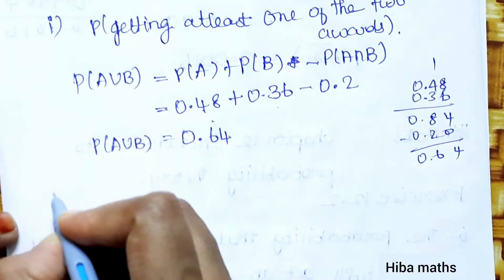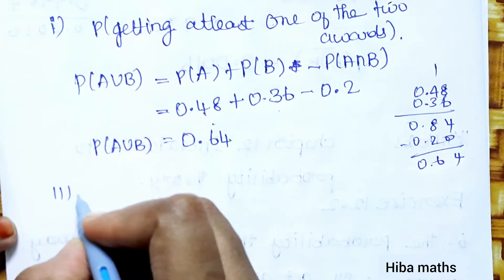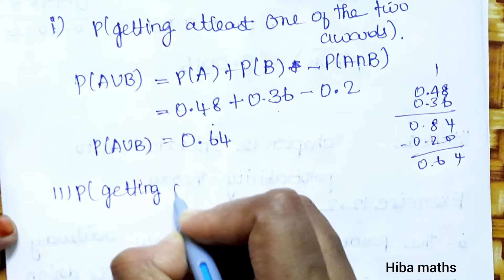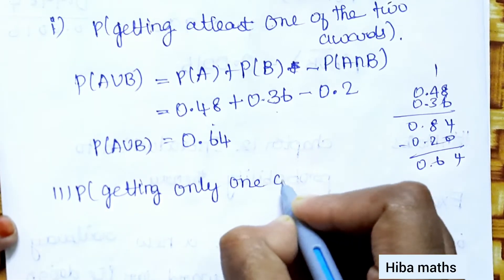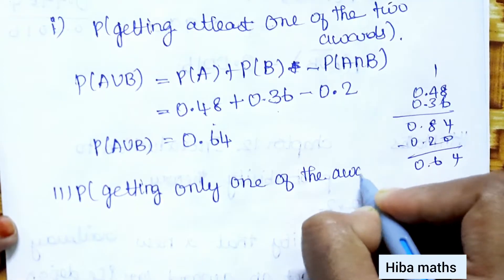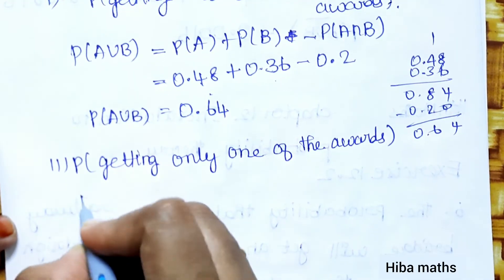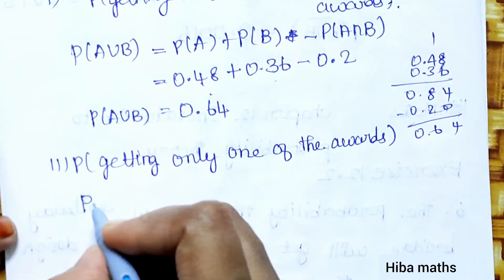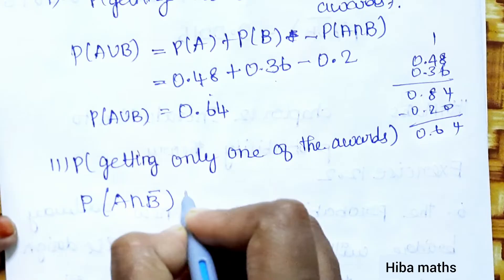For the second subdivision — getting only one of the awards — we use: P(A∩B') + P(A'∩B).